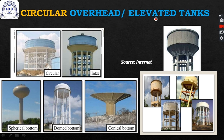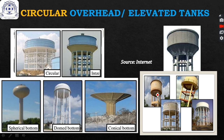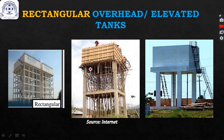Circular overhead or elevated water tanks are used for large storage and are commonly seen. These include the intze tank, spherical bottom tank, domed bottom tank, conical bottom tank, and flat bottom tanks. Rectangular overhead tanks are less frequently used compared to circular overhead tanks.